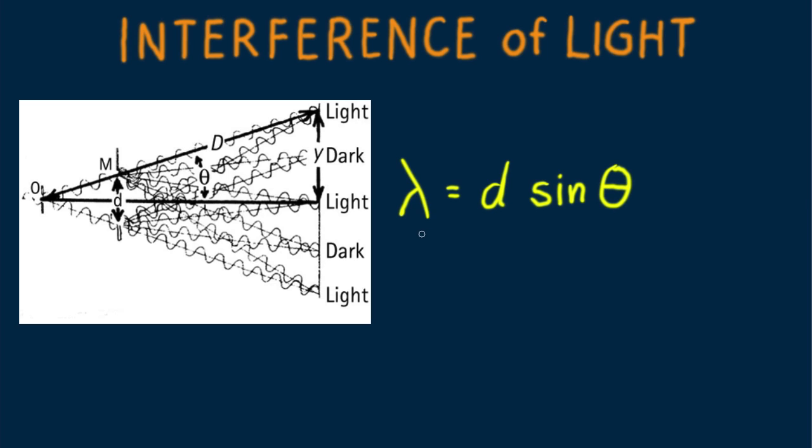Where lambda is the wavelength of light being diffracted, d is the distance between adjacent slits, and theta is the angle between lines to the central fringe of light and the first off-center constructive interference fringe. From the diagram sine theta is the ratio of distance y to distance big D, where y is the distance on the screen between the central fringe of light and the first constructive interference fringe on either side.